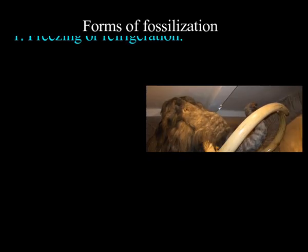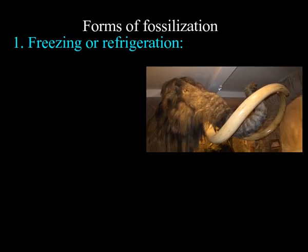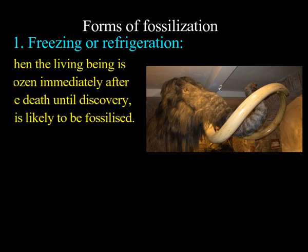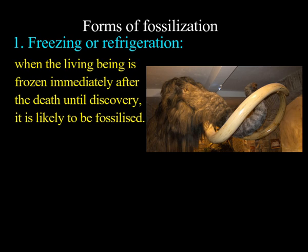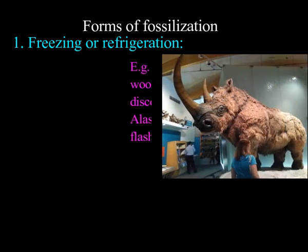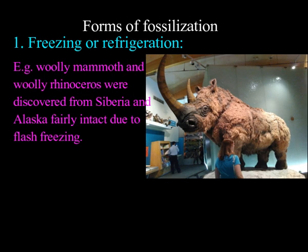The first process is called freezing or refrigeration. Freezing is the process by which we lower the temperature to an extent where decomposition is retarded. When a living being is frozen immediately after death until discovery, it is likely to be fossilized. For example, the Woolly Mammoth and Woolly Rhinoceros were discovered from Siberia and Alaska fairly intact due to flash freezing.